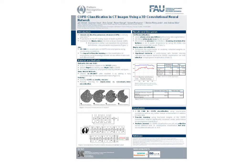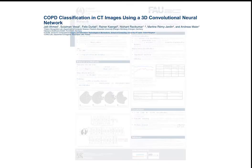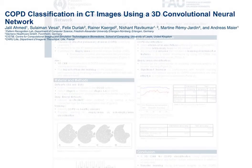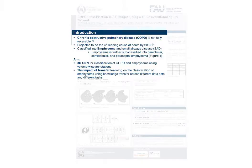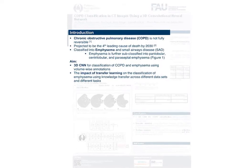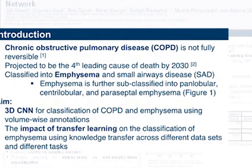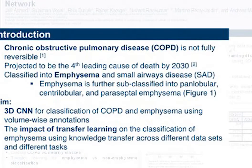Hello everyone, I am JD Lehmath and welcome to the poster presentation: COPD classification in CT images using 3D convolutional neural networks. COPD is a lung disease characterized by irreversible damage to the lung airflow. The primary causes include smoking and air pollution. COPD is classified into emphysema and small airways disease.